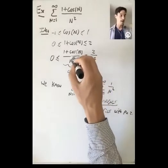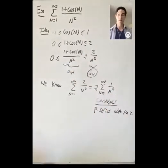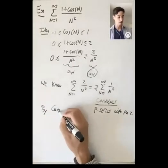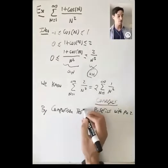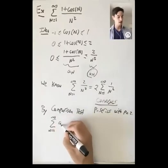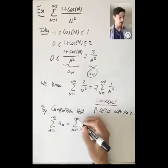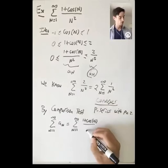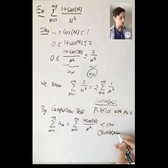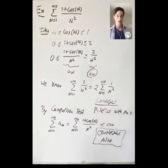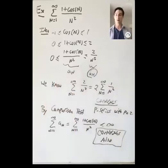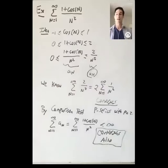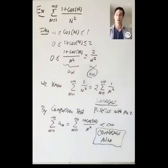So we have the a_n sequence and the b_n sequence, and we saw that the sum of the b_n's — the bigger things — converges. By the comparison test, because the sum of the b_n's converges, the sum from n=1 to infinity of the a_n sequence — which is (1 + cos n) / n² — converges also. This is a great example of the comparison test, and it builds on ideas we already saw for sequences rather than being a totally new concept.